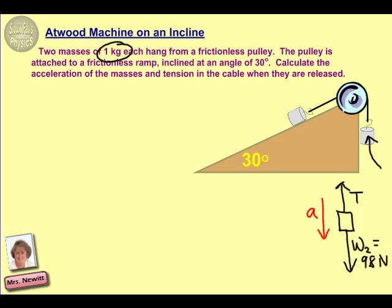On problems with an incline, it can be difficult to tell exactly which direction the objects will move. If the incline were steep enough, the object on the ramp might travel up while the hanging object slides down. If we set up our free body diagram incorrectly, we will simply get a negative value for acceleration at the end. So don't feel like you need to know the direction for sure when you start — a negative result just means the situation is reversed from your diagram.